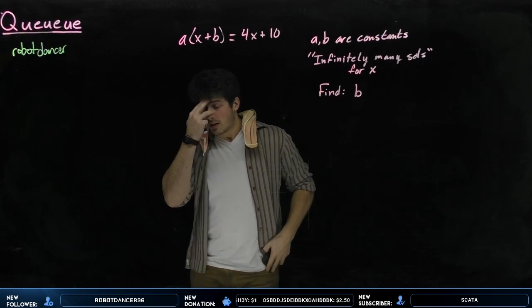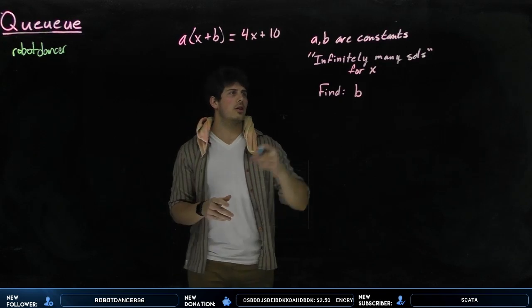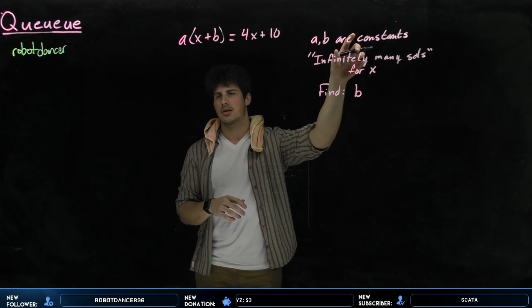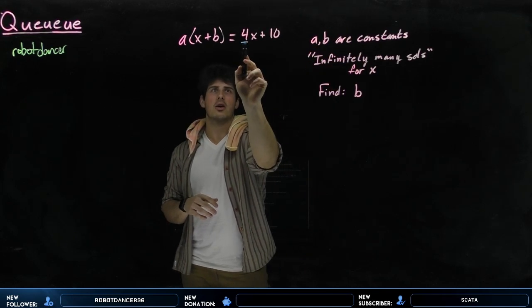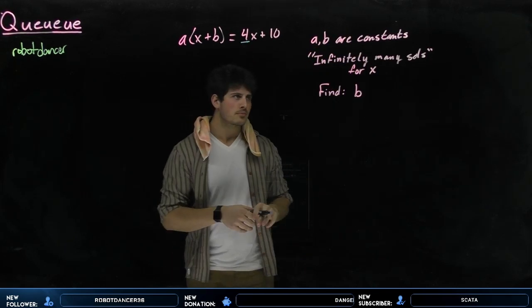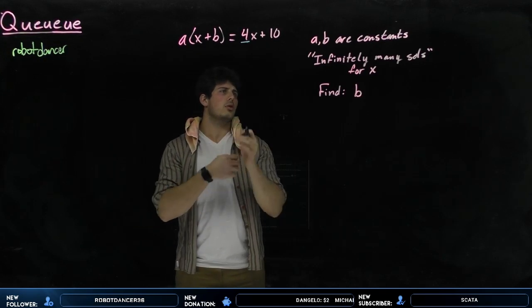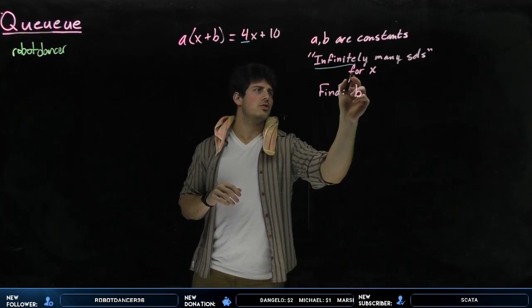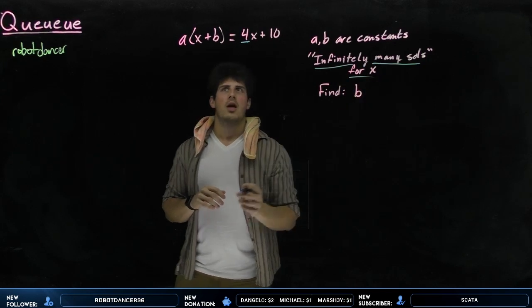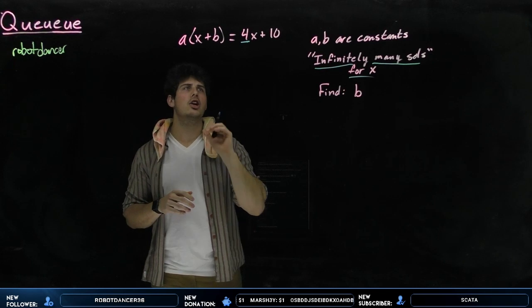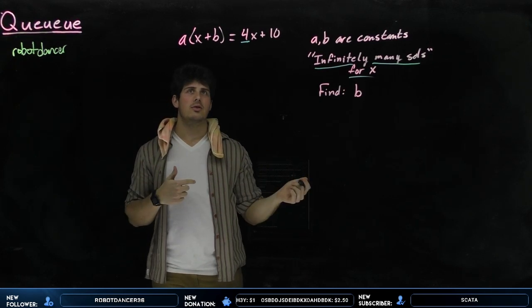If you see a question where they ask you if there are infinitely many solutions, so they say it's true for all values of x and you're dealing with constants, we call this constants and coefficients because we have coefficients in front of our x values or in front of our variables. The important thing to note here is that this is going to let us do something really cool.